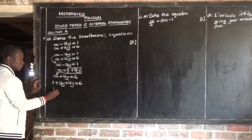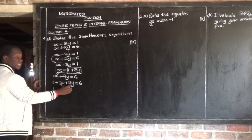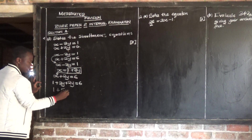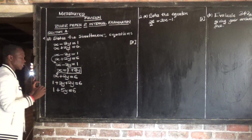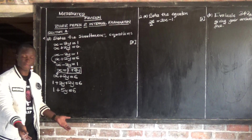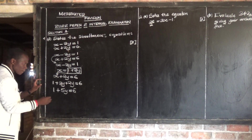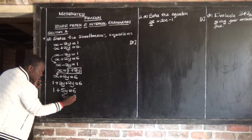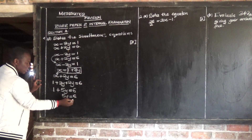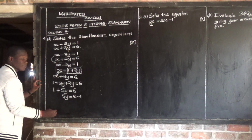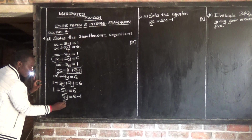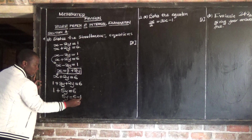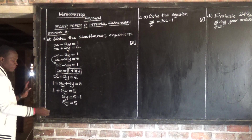So 3y plus 2y gives 5y, and we have 1 plus 5y is equal to 6. At this level, I'm going to collect the like terms. The value of 5y this side is equal to 6; transposing the 1 to the other side gives negative 1. So 5y is equal to 6 minus 1, which gives 5. For us to remain with y, we divide both sides by 5.